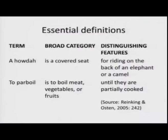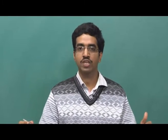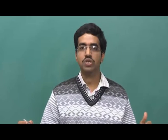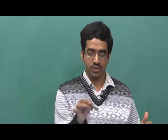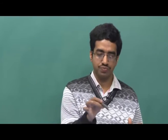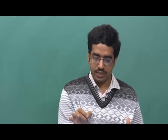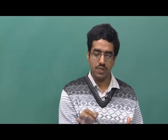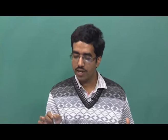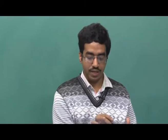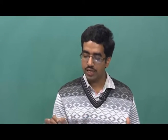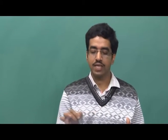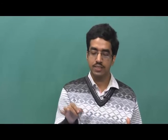However, we are more interested in the other two kinds: essential definition and extended definition. An essential definition has three main parts. For example: 'A howdah is a covered seat for riding on the back of an elephant or a camel.' Another example: 'To parboil is to boil meat, vegetables or fruits until they are partially cooked.' You can see that an essential definition has three main parts.